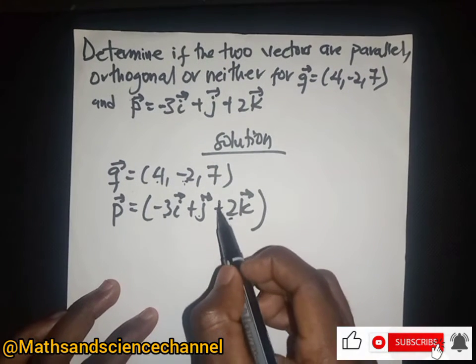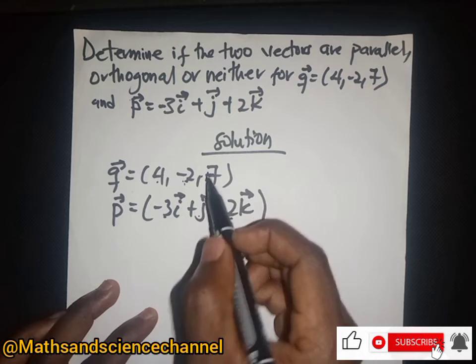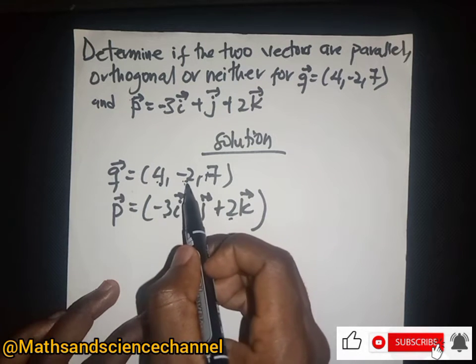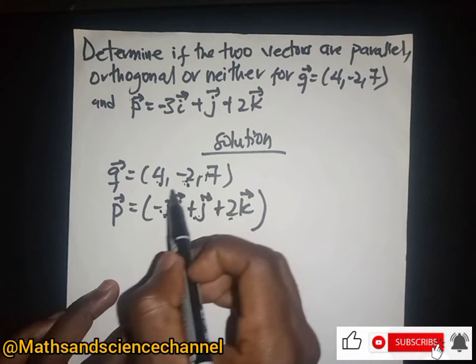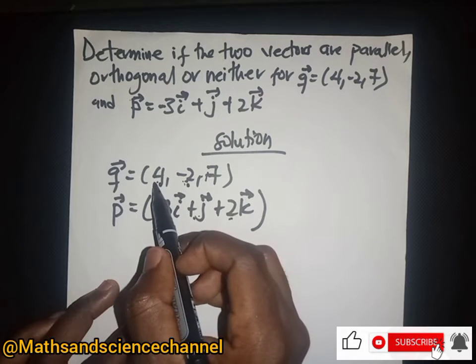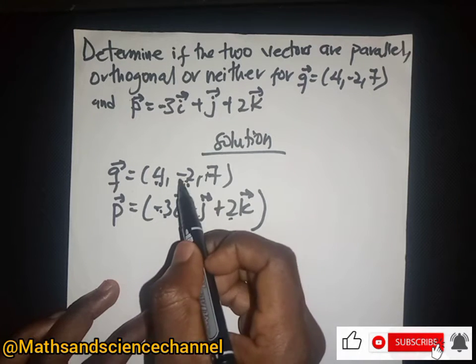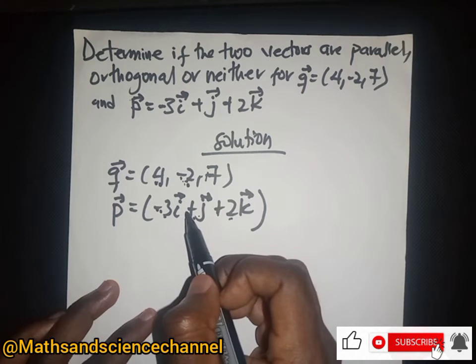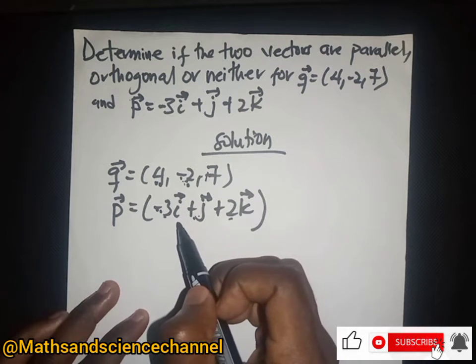Looking at the first and second components for the two vectors, they have opposite signs. We have positive here but negative here, and negative here but positive here. This means there is no possible way for the two vectors to be scalar multiples.